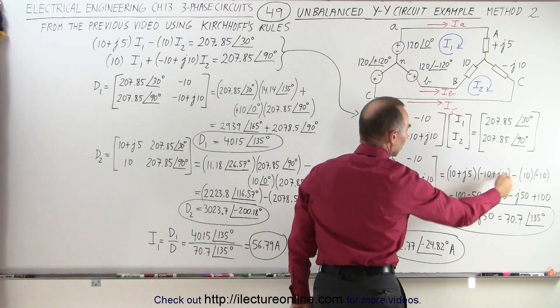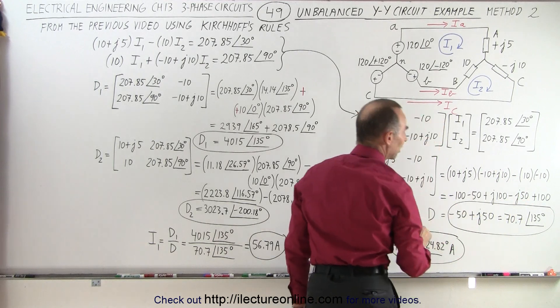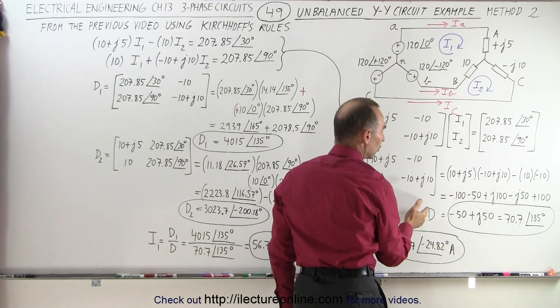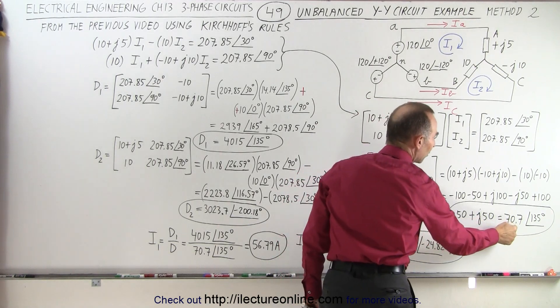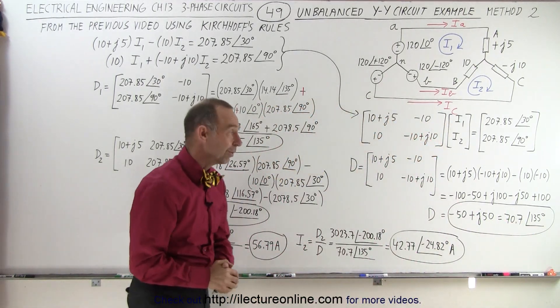That minus gives us 100. Multiplying this together gives us these values right here. Converted to the determinant, it's equal to minus 50 plus j50 or 70.7 with a phase angle of 135 degrees.